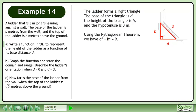Using the Pythagorean theorem, we have d squared plus h squared equals 9. We need to isolate the term with h. Bring d squared to the right side of the equation to get h squared equals 9 minus d squared.